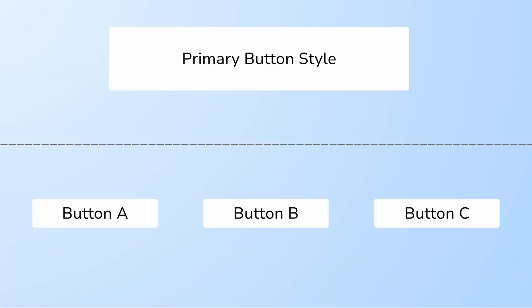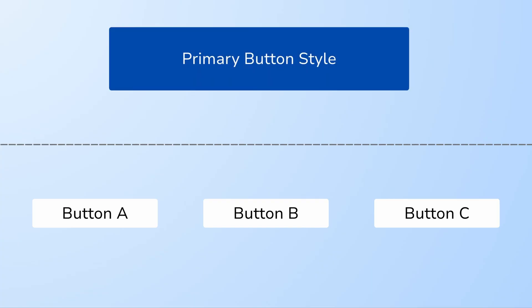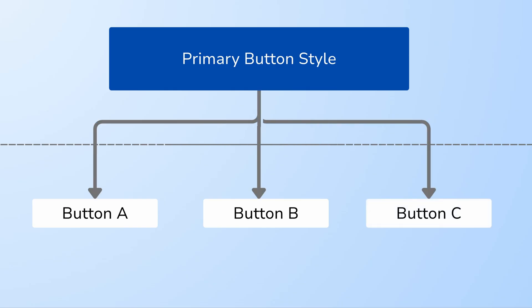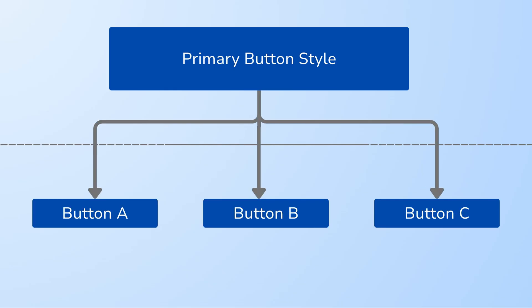A style is simply a template look that you can apply to multiple elements. So if our primary button style is a dark filled blue like this, we can then assign the style to multiple button elements throughout our application, and they will then inherit the style from that primary button style.